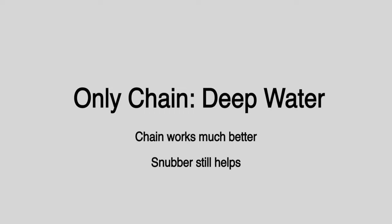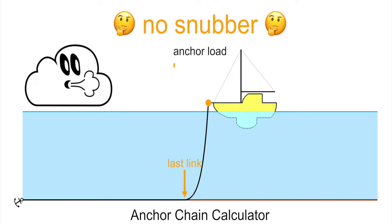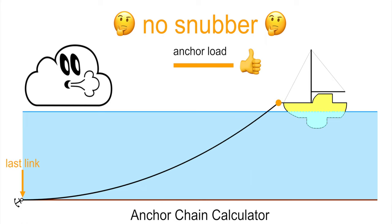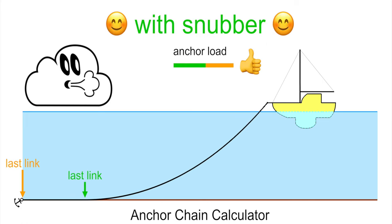In deep water, chain is working much better. Again, first without snubber and then with snubber. The difference in anchor load is now much smaller.